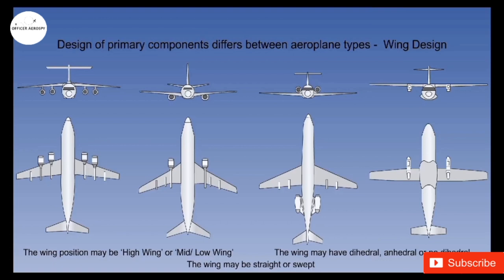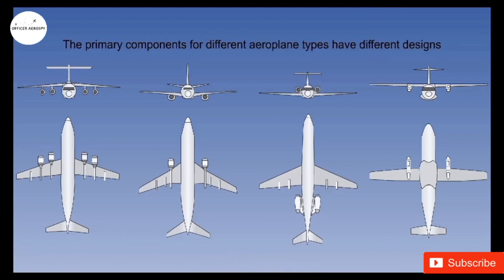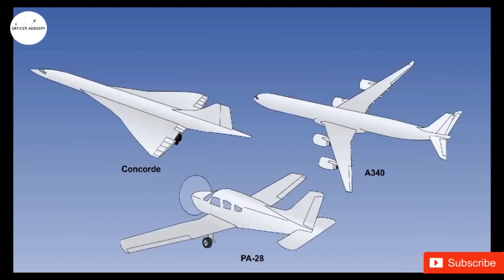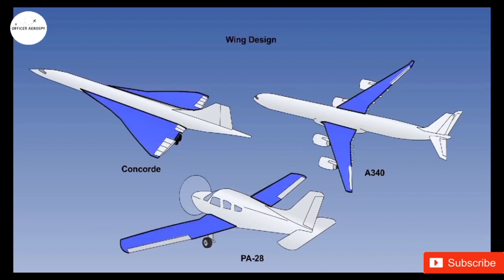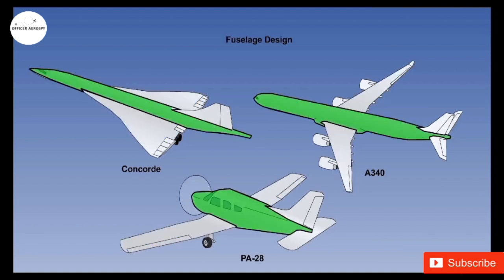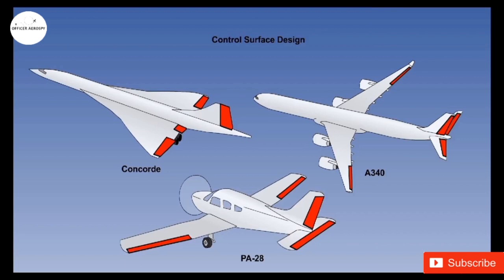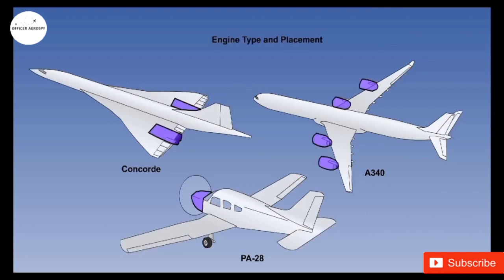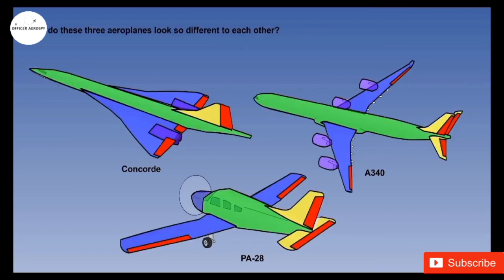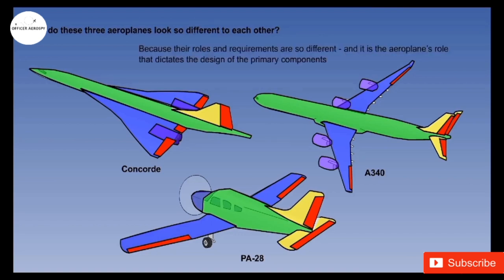So how do the fuselage, tail surfaces, controls, and engine type and placement differ between airplanes? Let us see with an example. We have three airplanes: the Concorde, the A340, and the PA28 — all have different designs. Let us study how primary components vary between these airplanes. Observe the different designs of wing shape and position. We will consider the wing shaping, then the fuselage shape, the shape and size of the tail surface, the variation in size and location of control surfaces, and the location and number of engines. Each design has its own disadvantages and advantages, and is ultimately a role-centered compromise.